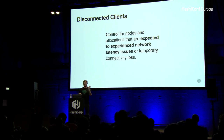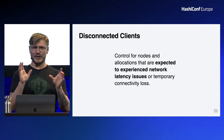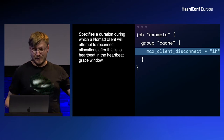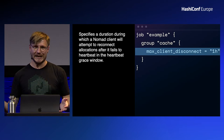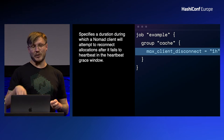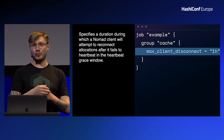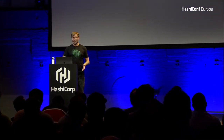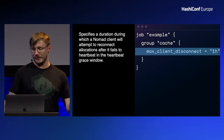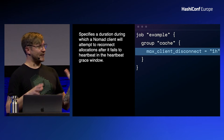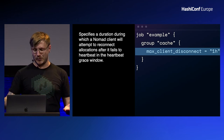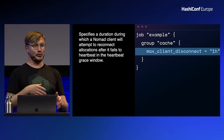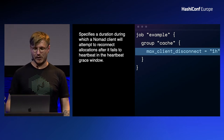These two new statuses are: allocations can become unknown, and nodes can become disconnected — transitioning states to account for disconnected clients. It's configured with one parameter to the task group: max_client_disconnect, a time duration. If the allocation is on a disconnected client, Nomad marks it as unknown and the node as disconnected rather than lost and down. If disconnected for longer than one hour, it follows the old routine. If it reconnects before one hour, the allocation transitions back to running without restarting — which is important — and the node returns to a ready state.